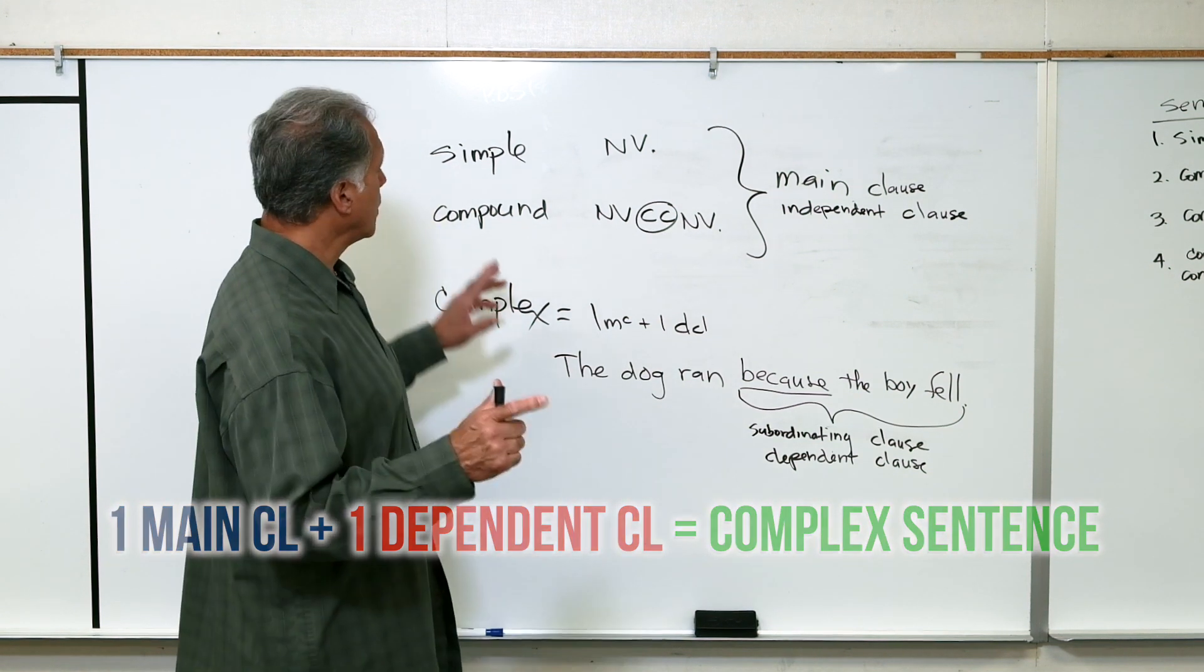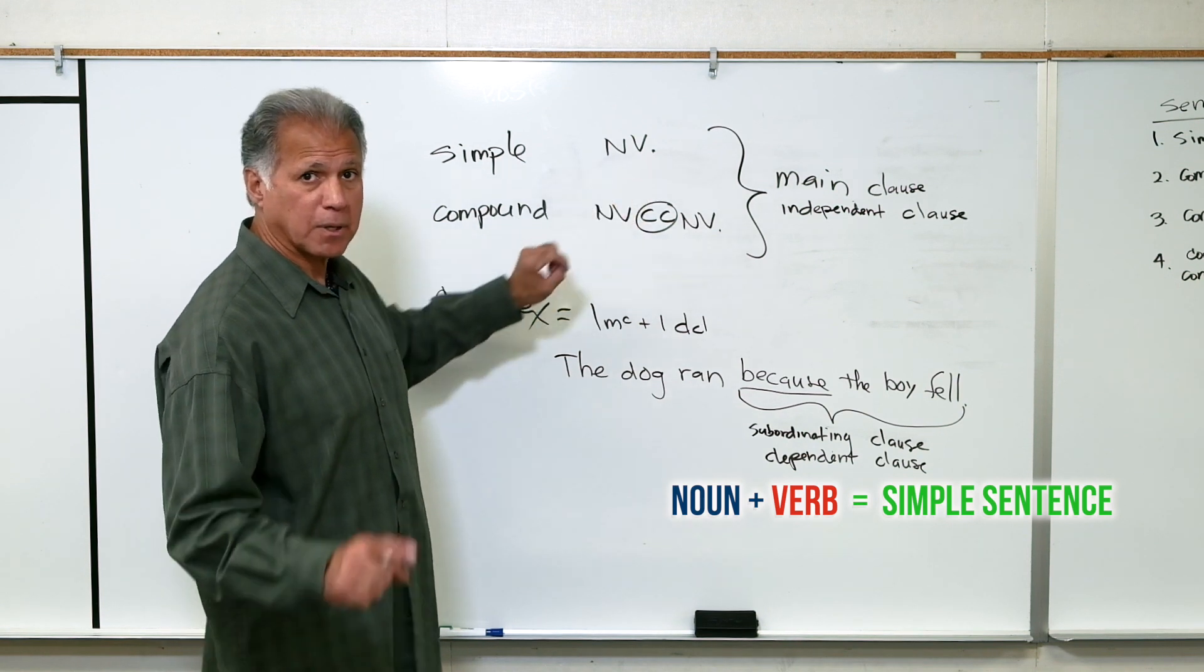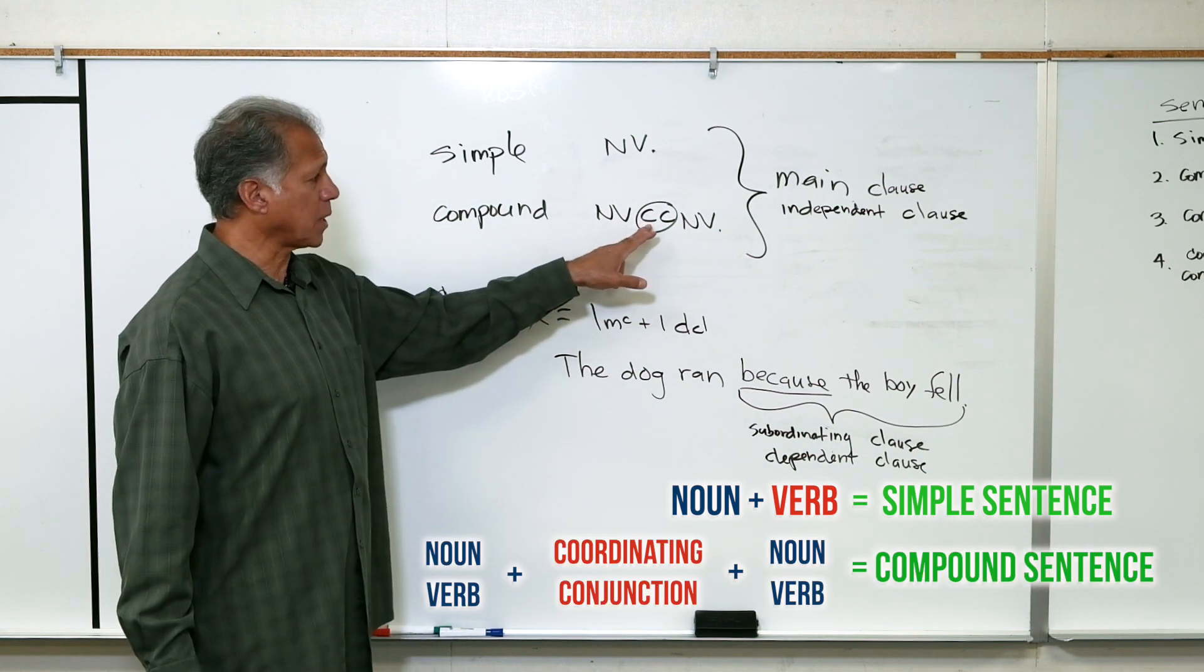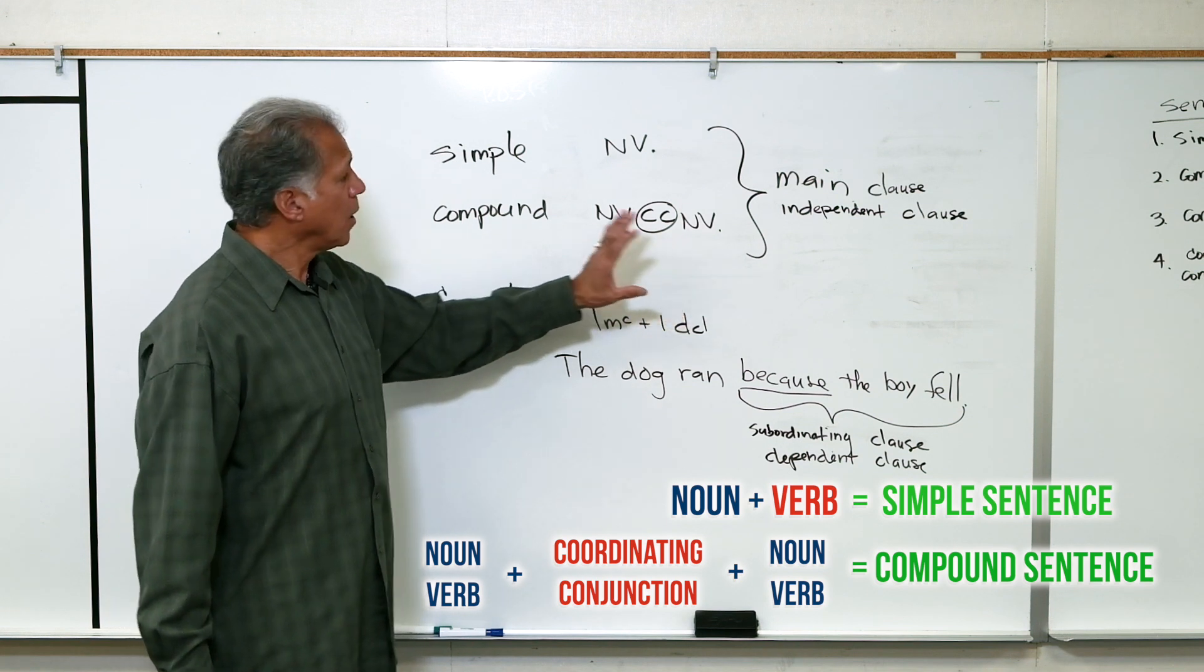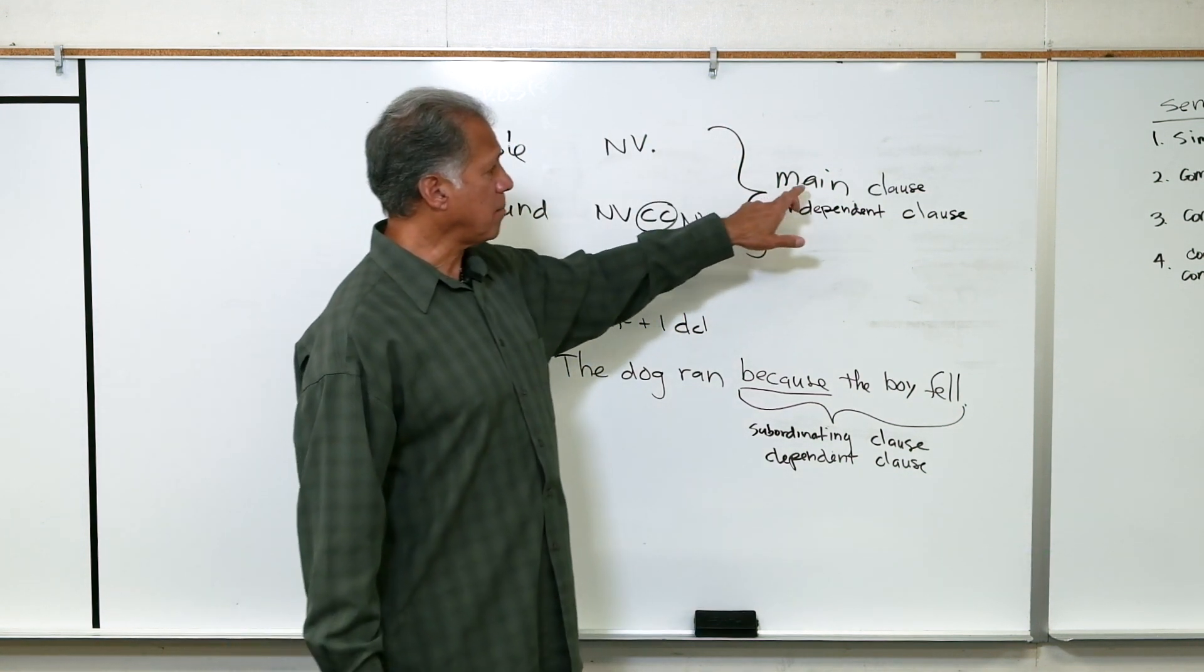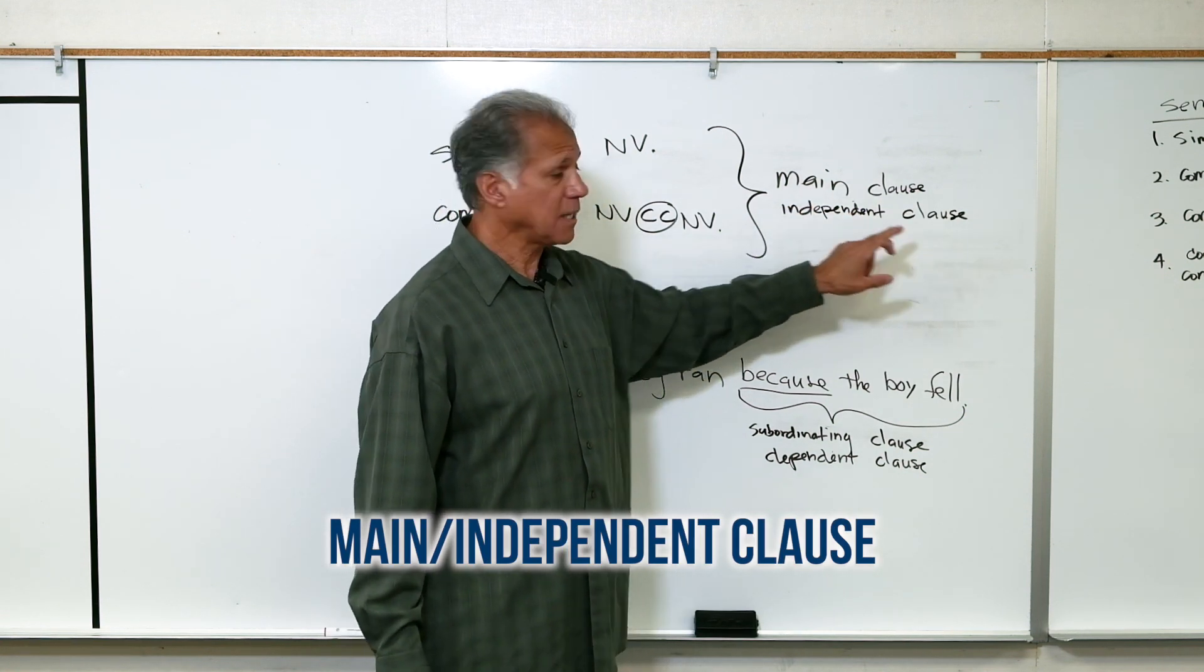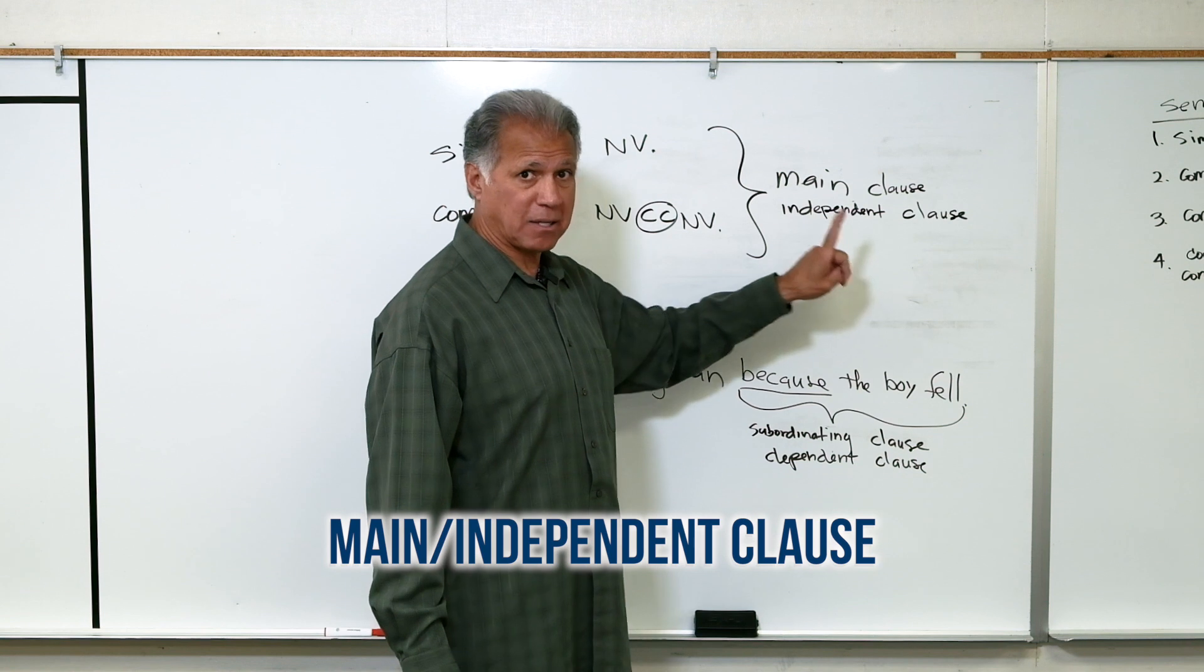So we said that a simple sentence is a noun and a verb. A compound sentence is a noun, verb, coordinating conjunction and a noun, verb. We also call these two sentence structures main clause or the independent clause.